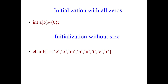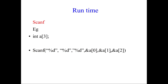Next, initialization with all zeros: if you want the array to be initially all zeros, you write a[5] = {0}, so all 5 places will be 0. Then, without size: you can also declare an array without specifying a size. The computer will count the values you have given — for example, 8 values — and create the array with an index of 8.